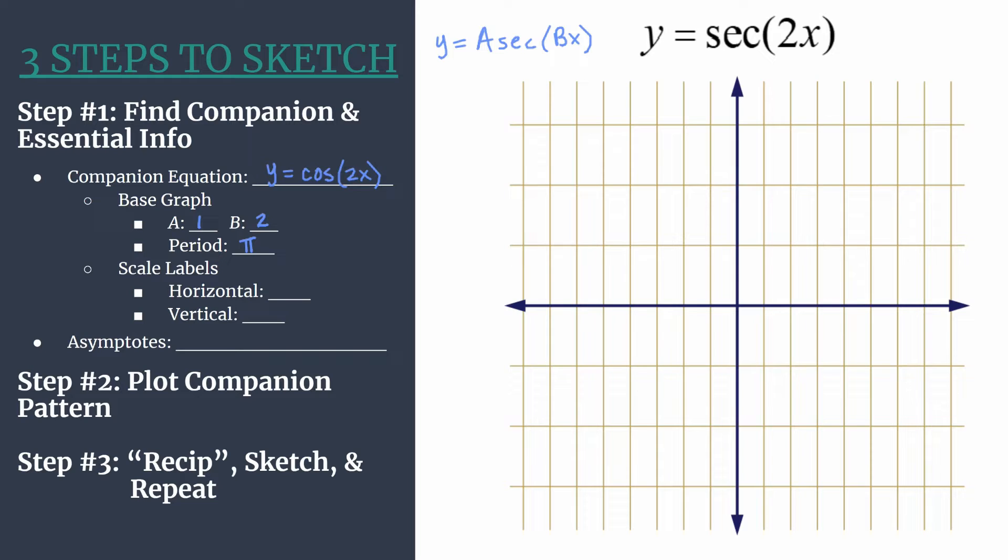Now that we have that information, we can decide on the scale for each axis. To get a horizontal scale where all of our points are spread equally, we're going to take the period and divide by 4. So each tick mark on the horizontal axis will be π over 4. And for our vertical scale, we'll use 1.